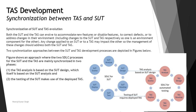Both the SUT and the TAS can evolve to accommodate new features, disable features, correct defects, or address changes in their environment. Any changes applied to the SUT or TAS may impact the other, so the management of these changes should address both SUT and TAS. In Part 1, we already understood the synchronization between requirements, defect tracking, and the management of several related things.